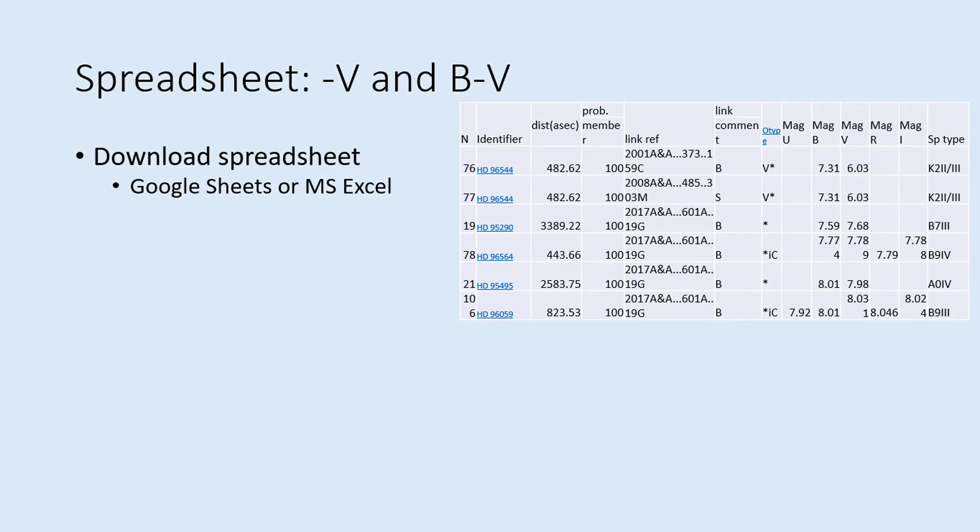Once you open up the spreadsheet, look at the data columns labeled MAG-B and MAG-V, the B and V filter magnitudes. Each line in the spreadsheet is a different star in the cluster.